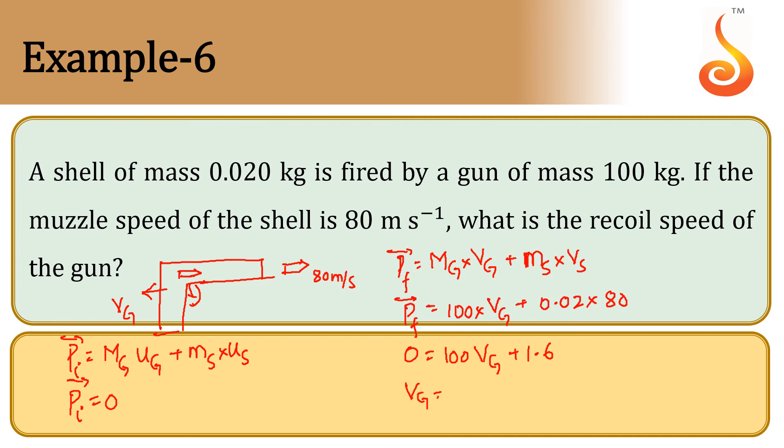What we get is velocity of gun equals minus 1.6 by 100, which is minus 1.6 times 10 to the power minus 2 meters per second, or minus 1.6 centimeters per second. This will be the velocity of the gun in the backward direction, where minus indicates the direction of the velocity.